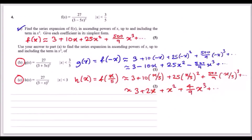Part b: use the answer from part a to find the series expansion in ascending powers of x up to the x term of a related expression. We compare the new function to f(x) and look for a pattern in how the two expressions differ.